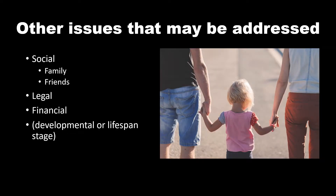Some other issues that may need to be addressed: social relationships with family and friends, social skills which also affect job and employment, legal issues if the client has them, and financial issues. Not often considered but probably important to look at are developmental or lifespan stage. You'll see different issues for clients who have young children as opposed to clients whose children have turned 18 and left the house. Older clients who may be approaching retirement age might also have a different set of lifespan issues they're dealing with.